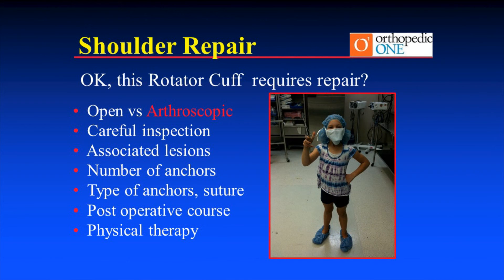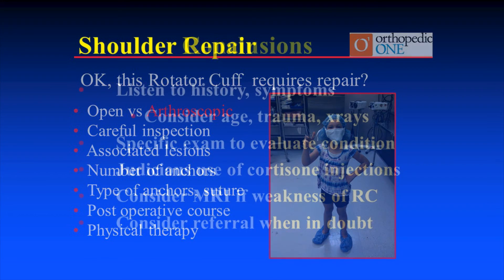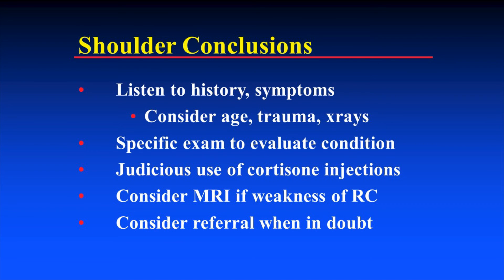You're going to hear more about rotator cuff repairs. Key takeaways: listen to history and symptoms, consider age and trauma, get X-rays, perform specific physical exam. Use cortisone injections judiciously. If the patient has weakness, get an MRI before starting cortisone injections — otherwise you'll cover up their pain while the tear progresses. Consider a referral when in doubt. Thank you.